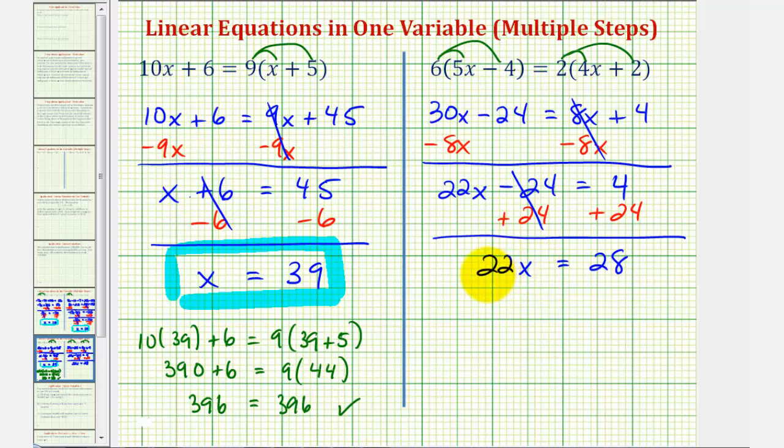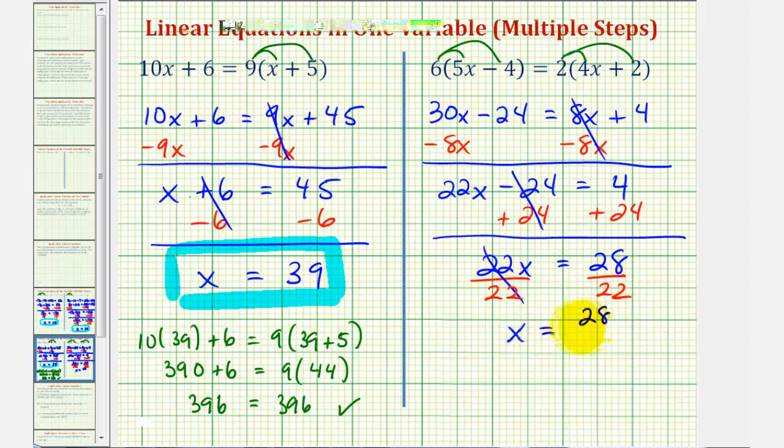And now to solve for x. Since 22x means 22 times x, to solve for x we'll divide both sides by positive 22. So this simplifies to x = 28 divided by 22.